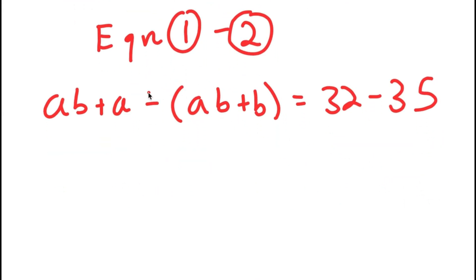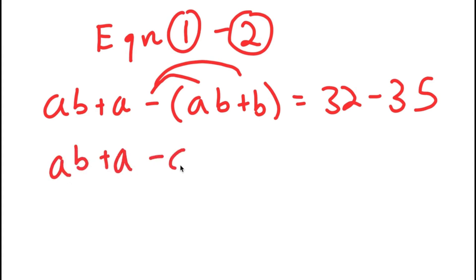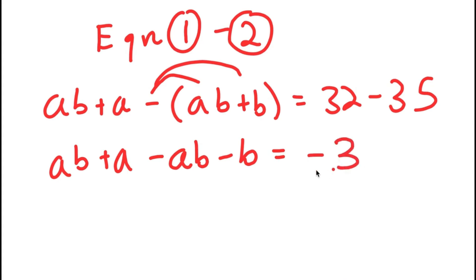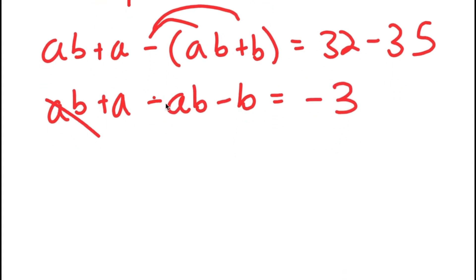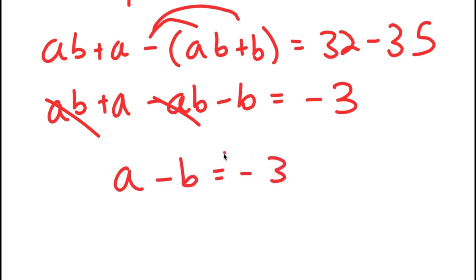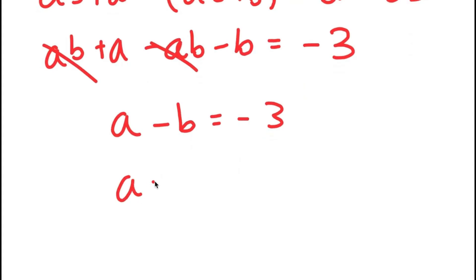To solve this, what I'm first going to do is distribute the negative sign. So now I get AB plus A minus AB minus B is equal to 32 minus 35, which is equal to negative three. Now I can cancel out AB and negative AB, so I'm left with A minus B is equal to negative three. And this means that A is equal to B minus three.